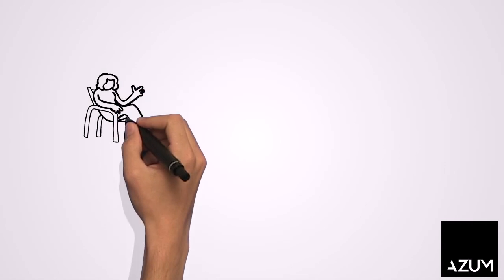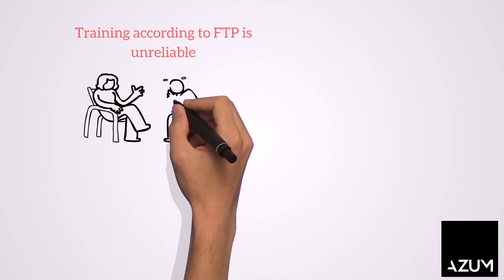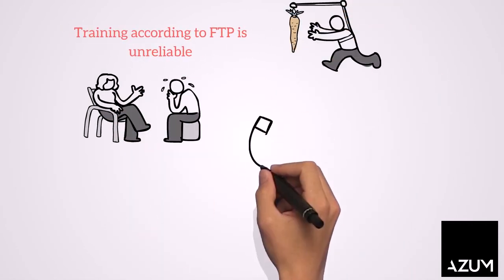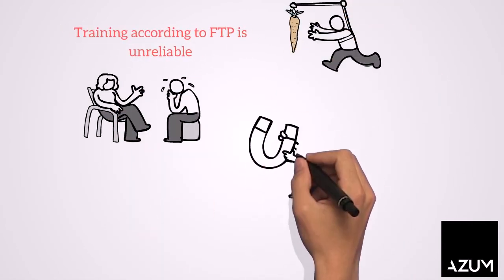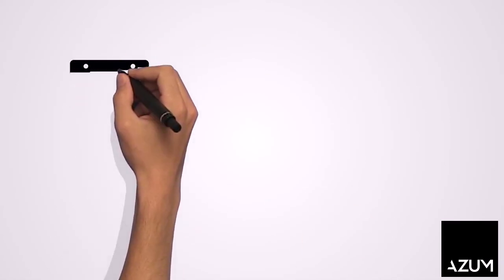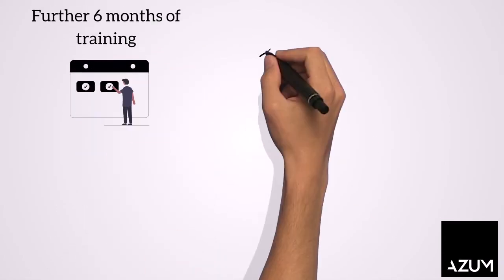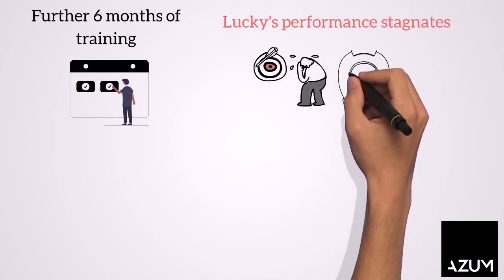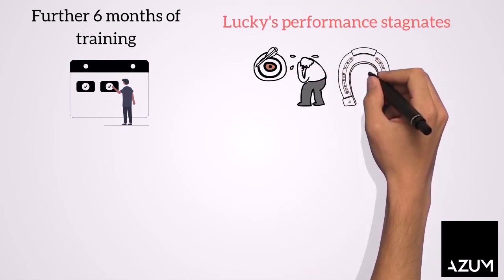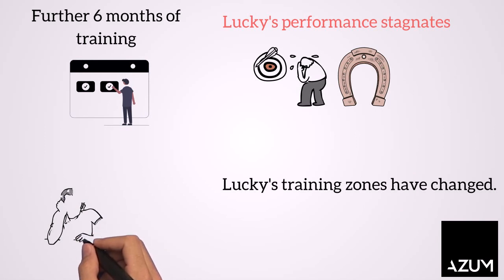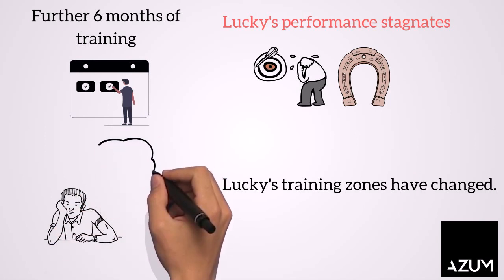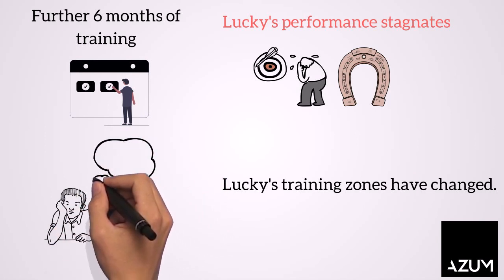The examples of Lucky and Luke show that training planning based on FTP is unreliable. Hitting the right training zones becomes a game of chance. After 6 months of training, Lucky's performance development has also stagnated. Due to the physiological adaptations, his training zones have changed. Despite the current FTP test, the training zones no longer fit for him either.